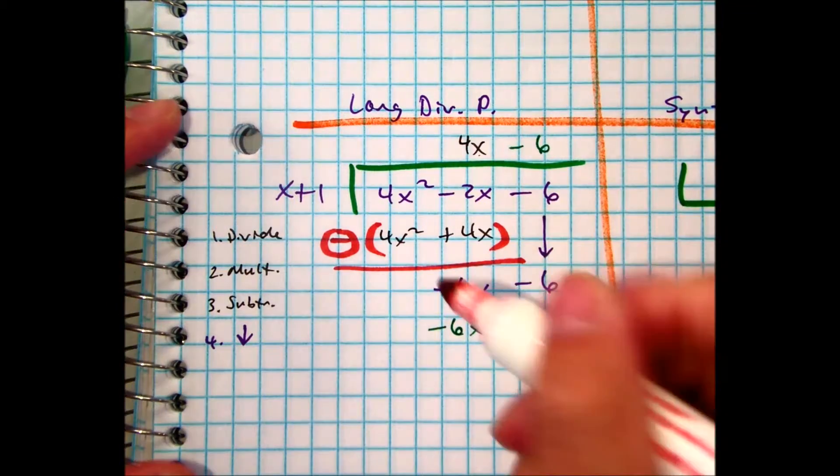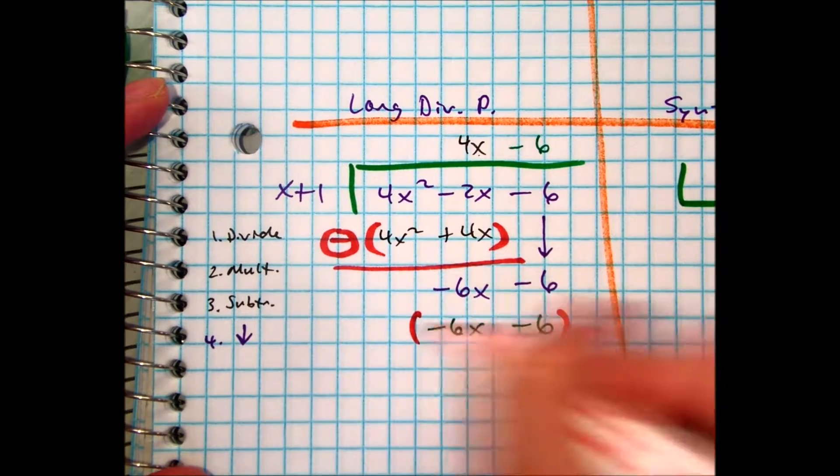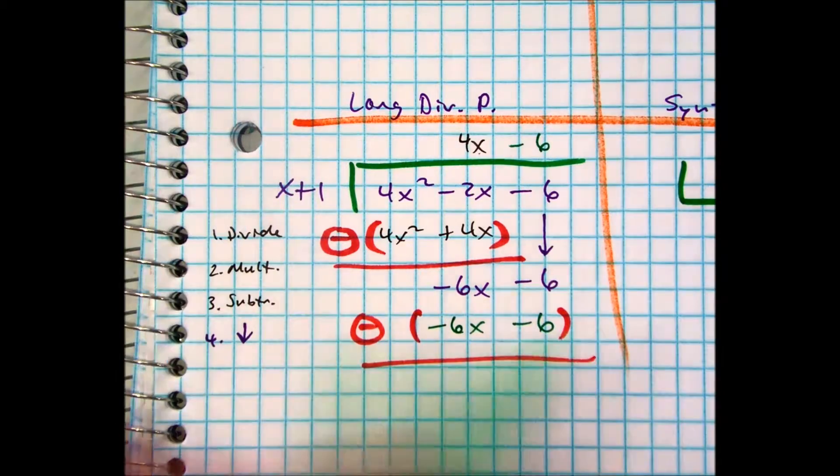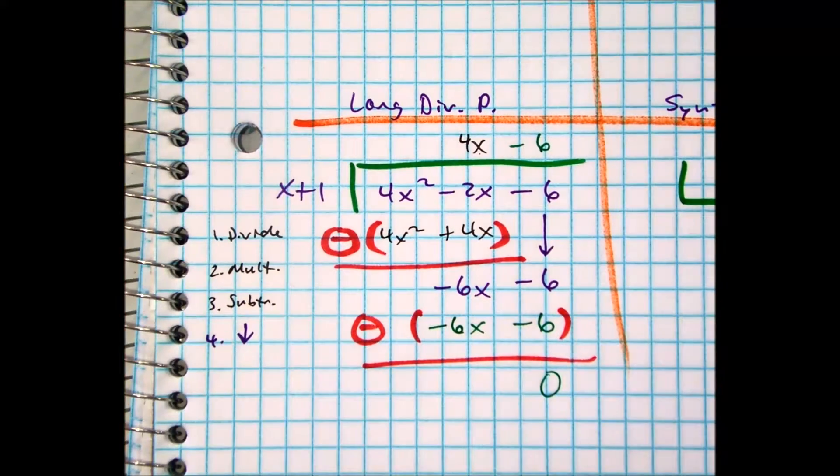And when you're subtracting numbers that are exactly the same, you'll get 0, right? Think about it, 2 minus 2 is 0. So that means I have no remainder, and my answer is...